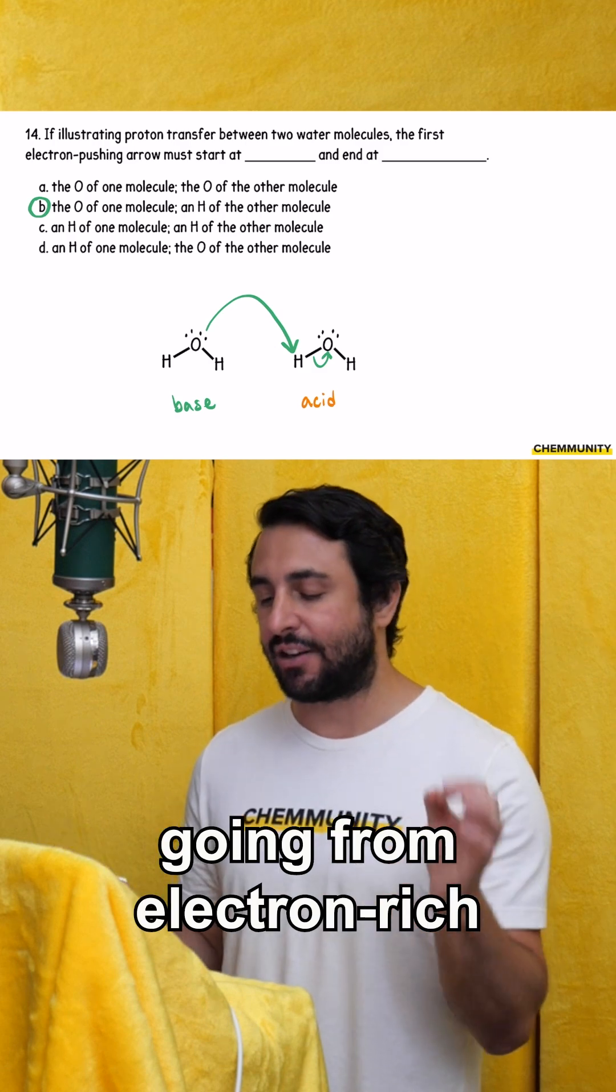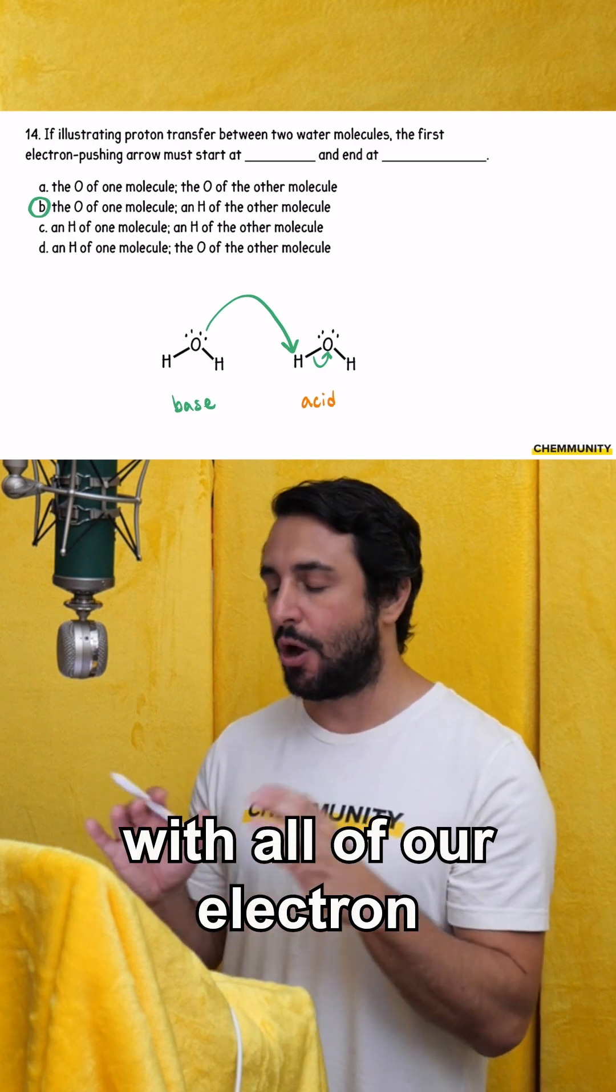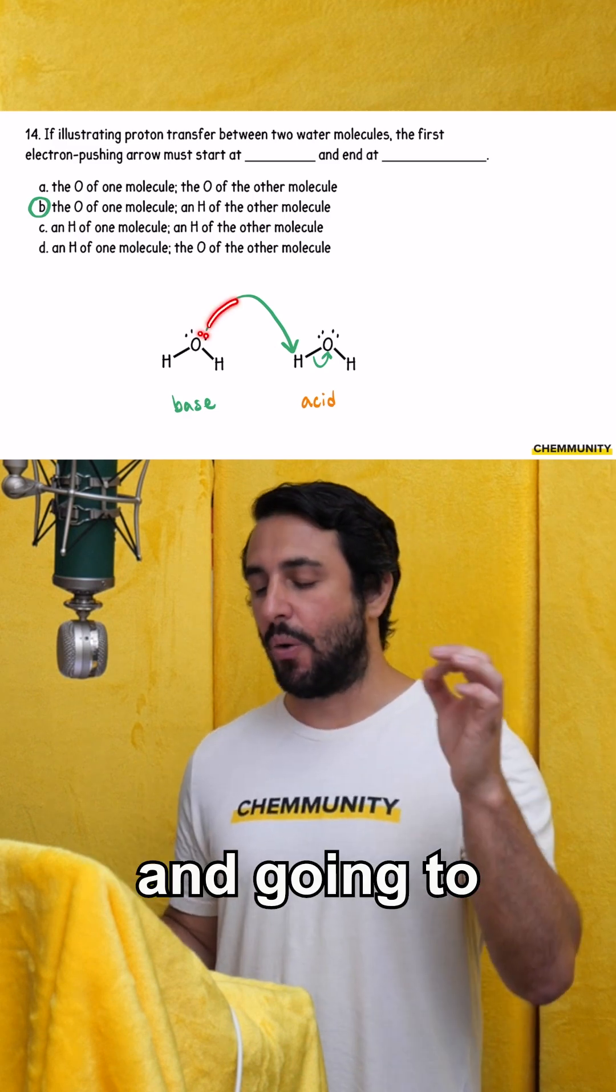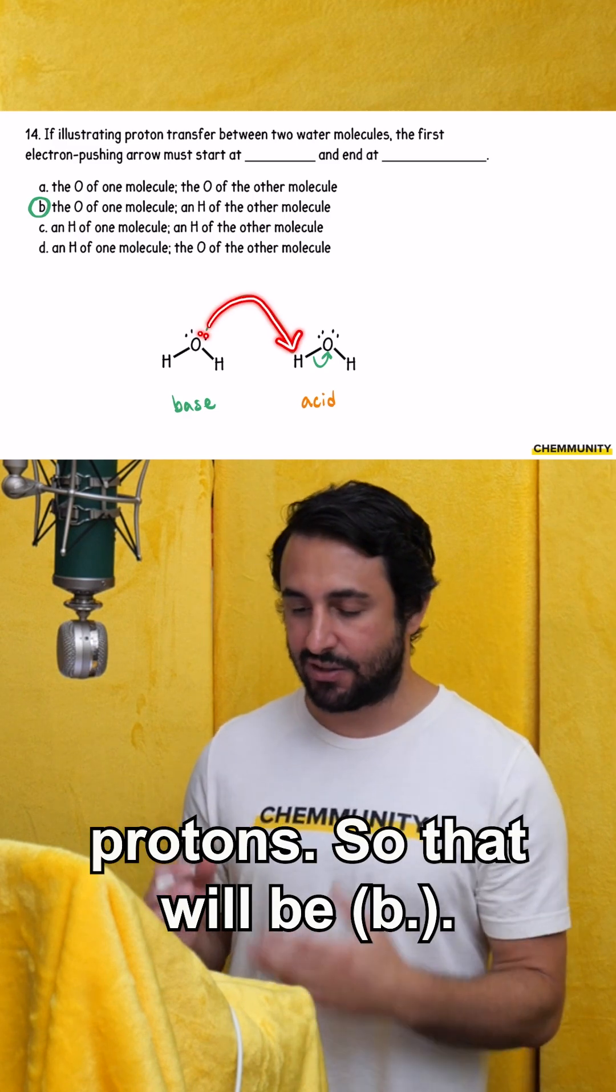Remember, we're always going from electron rich to electron poor with all of our electron pushing arrows. So we're starting from the lone pair and going to the electron deficient proton. So that will be B.